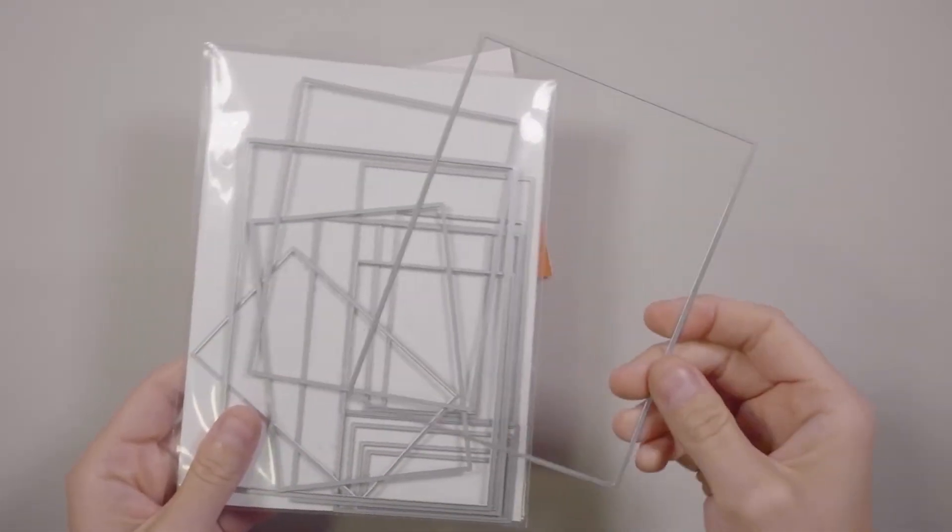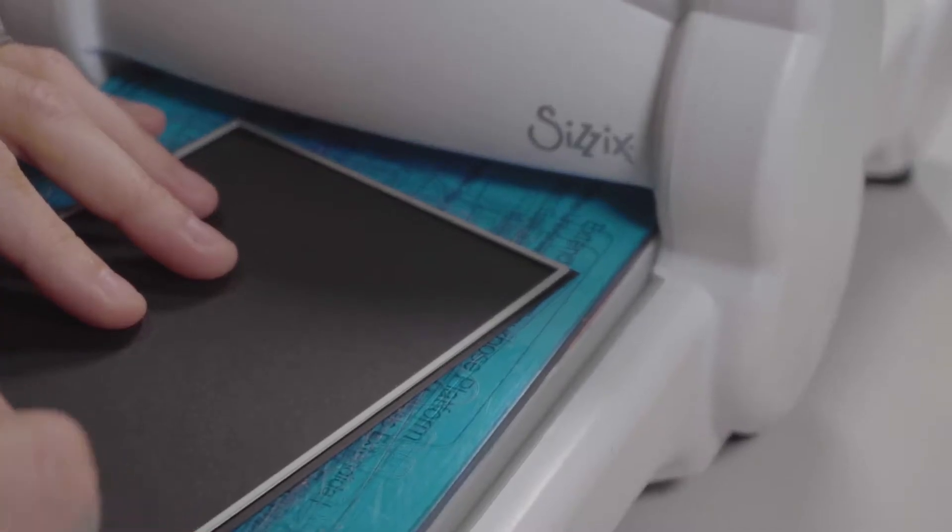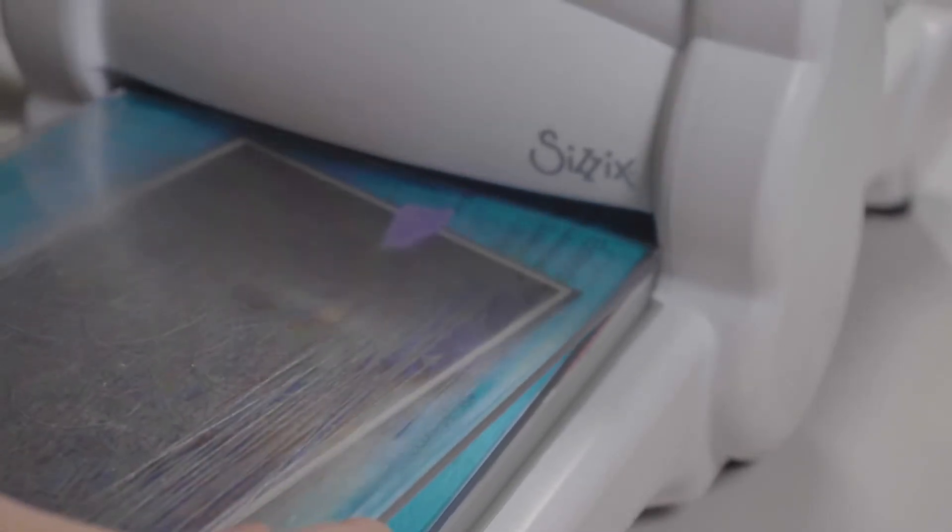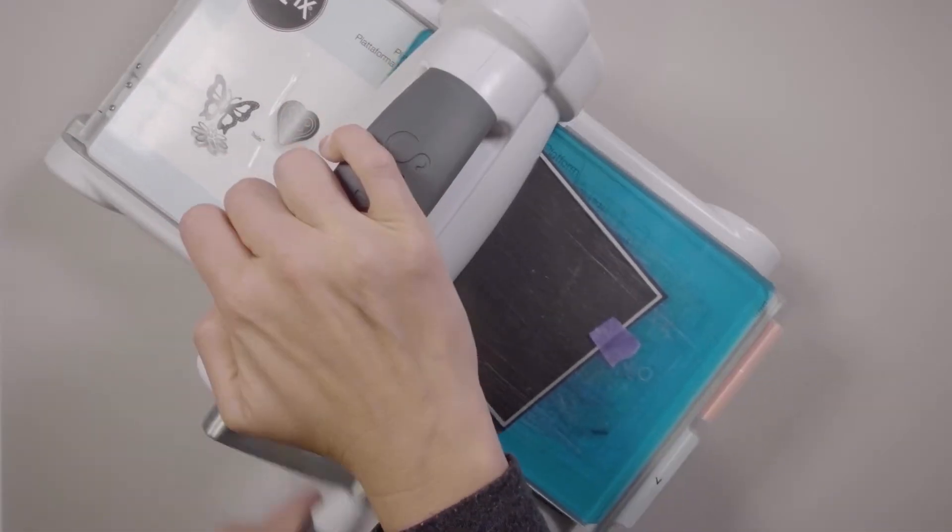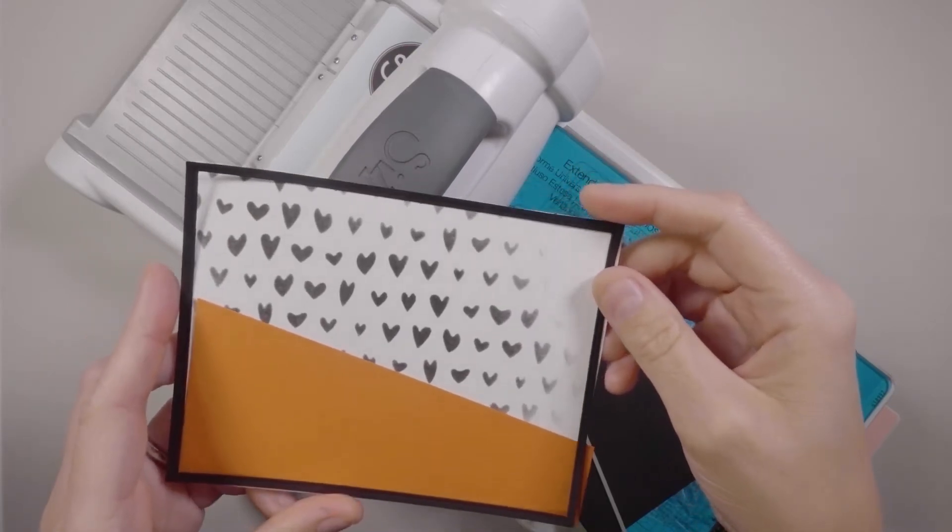For the final part of the background I'll be using these Hero Arts Rectangle Infinity dies. And I've chosen one that goes almost right up to the edge of my card. I want to make a very thin frame out of it. And I've got it taped down here so it doesn't shift around when it goes through the die cut machine. And check it out! It worked!